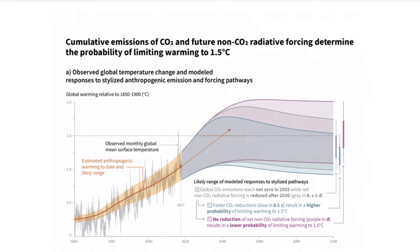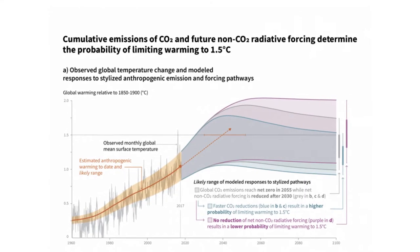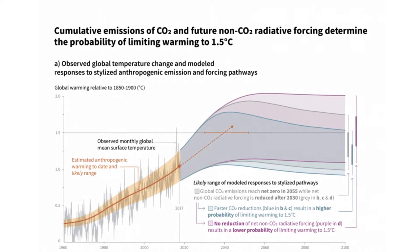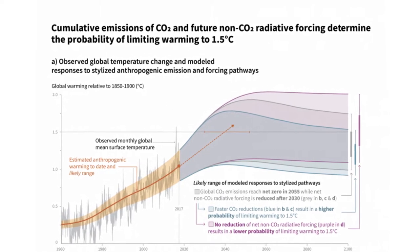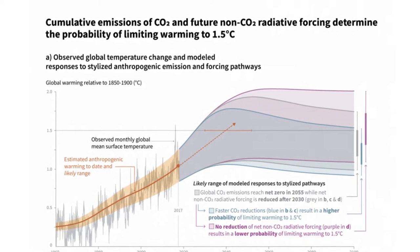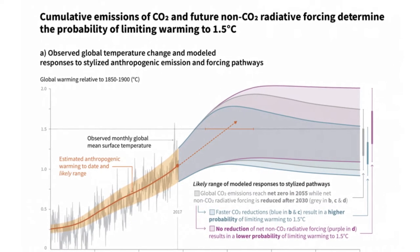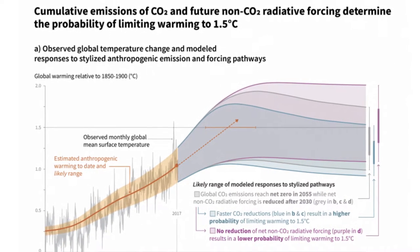Welcome back to Culture and the Environment. In this unit we're going to talk about climate change. This is really a big one. Scientists now estimate that the average land temperature in the past 10 years has been about 1.5 Celsius degrees higher than in the period between 1850 and 1900.